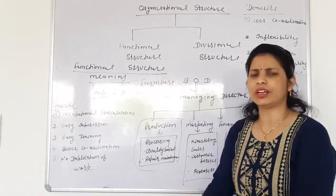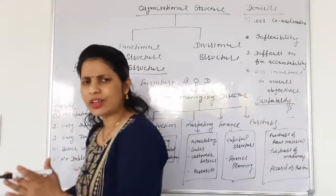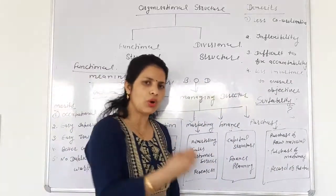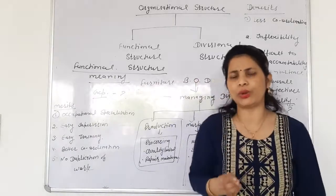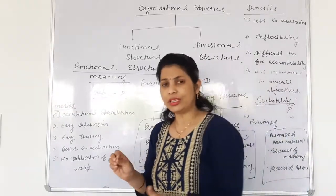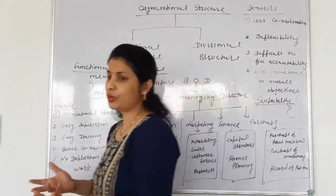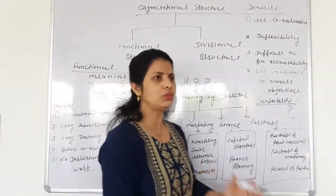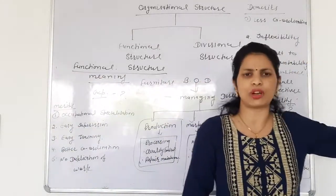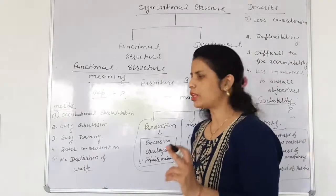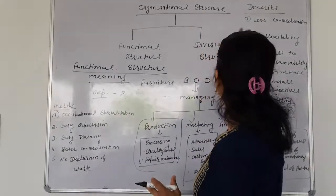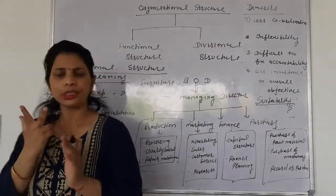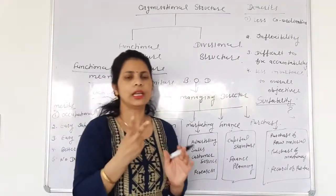If there is more interdependency, there is more dispute. If one department does not cooperate with another department, a dispute arises. The coordination becomes loose. The same situation is applicable in functional structure because everyone is interdependent — so more coordination, but interdependency sometimes creates disputes if departments don't cooperate.